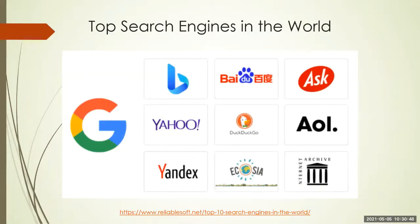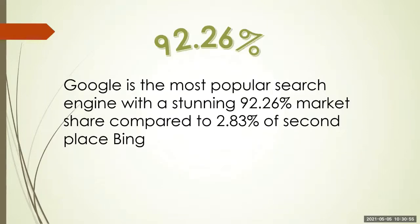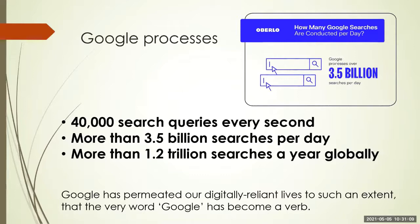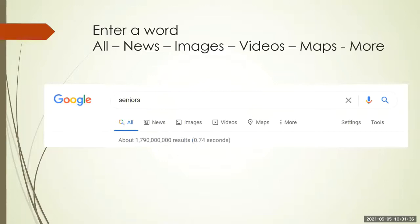Some of the top search engines I've already mentioned — here are some of the logos. Google is the most popular search engine with, believe it or not, 92.26% market share compared to 2.83% for second place, which is Microsoft's Bing. Google processes 40,000 search queries every second — that's more than 3.5 billion searches per day, or more than 1.2 trillion searches a year globally. Google has permeated our lives to such an extent that the very word Google has become a verb. Go Google it.